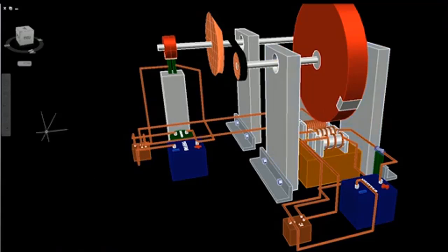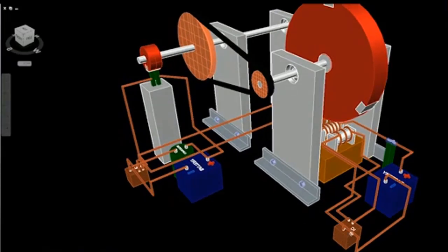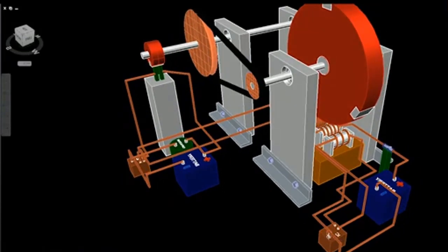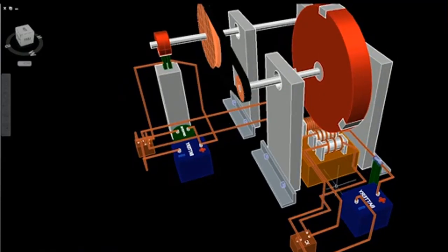Induced current in the secondary coil is rectified using a full-bridge rectifier, converting AC to DC current. The rectified current charges a high-voltage capacitor, which then transfers energy to the secondary battery.